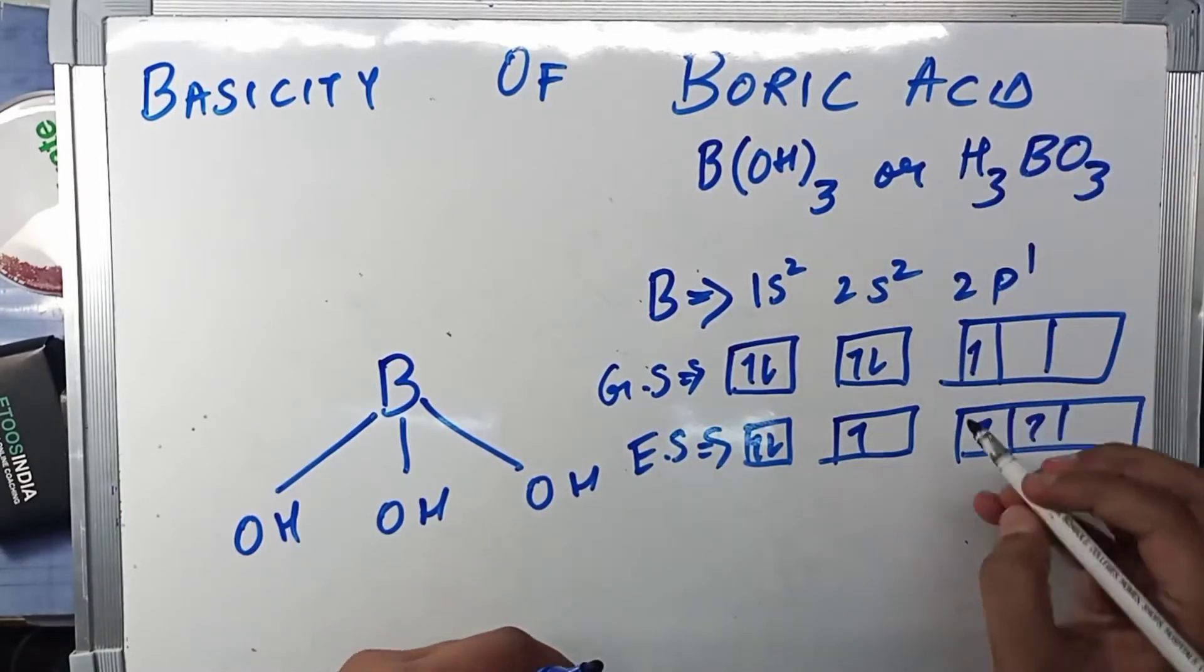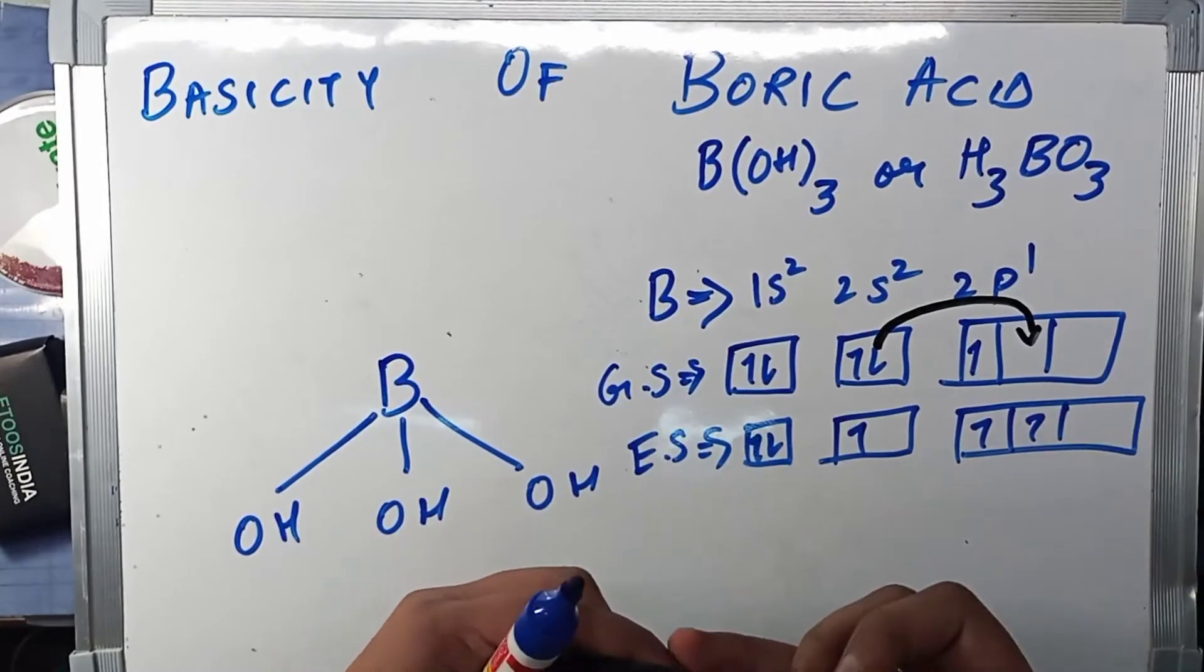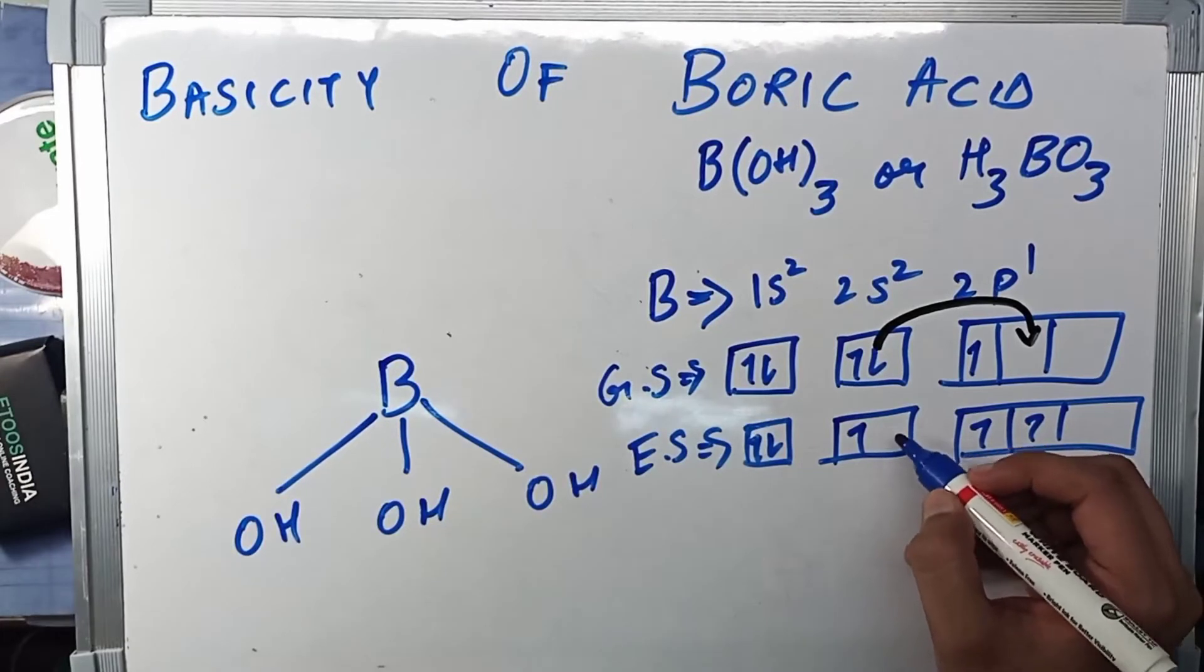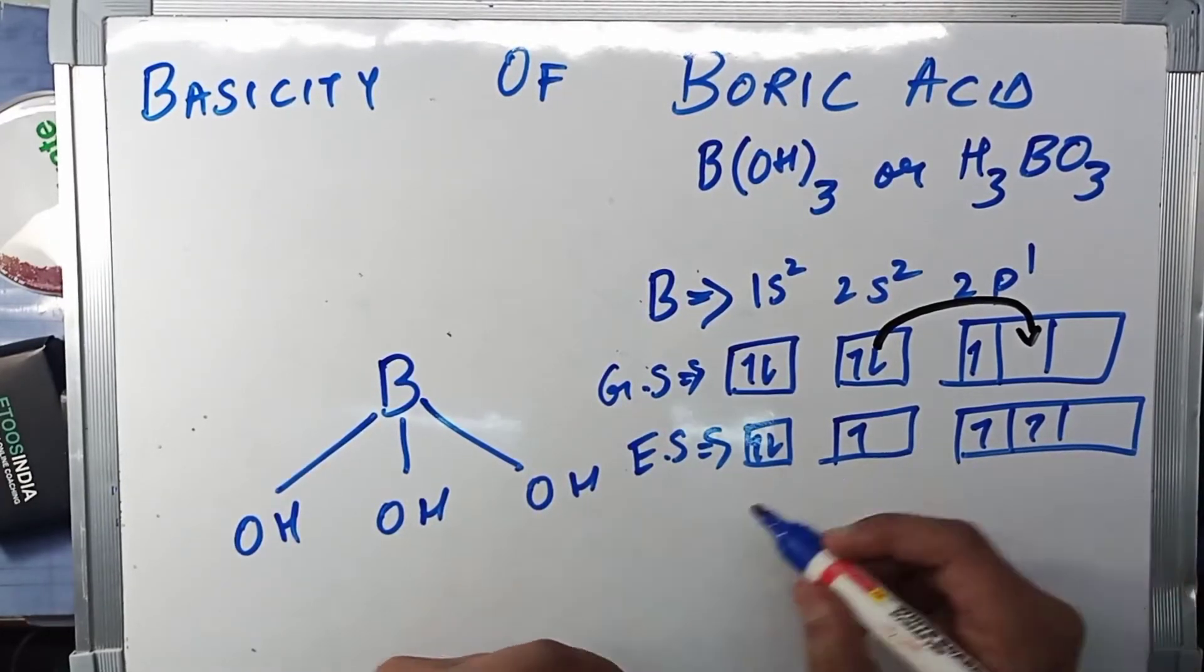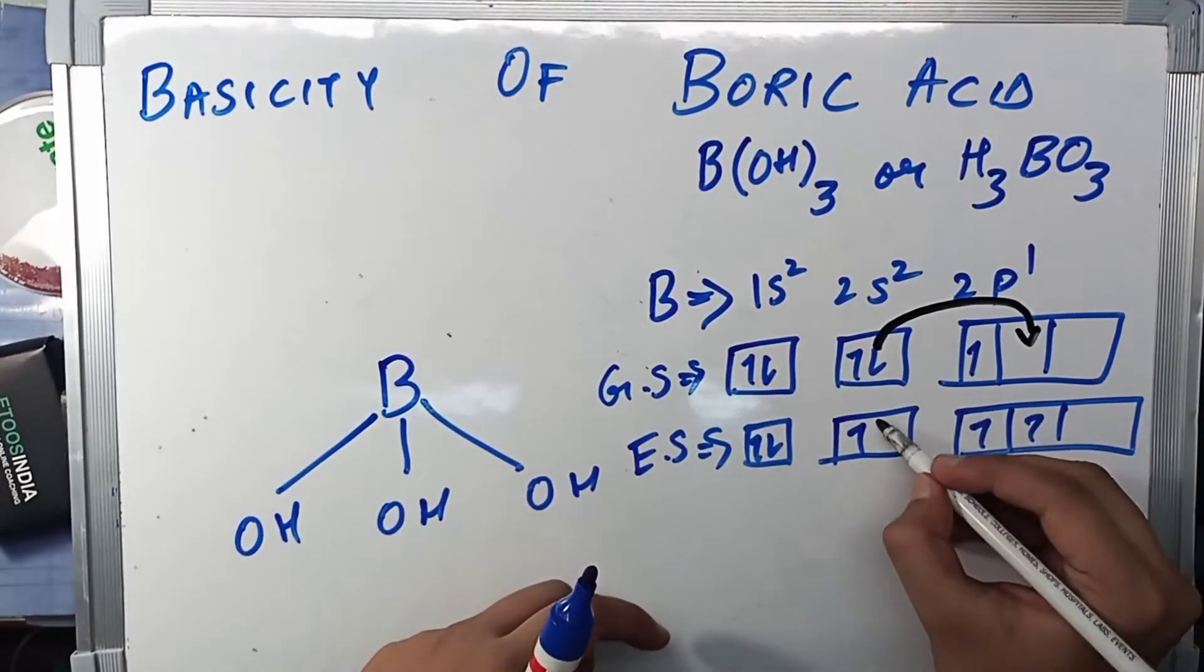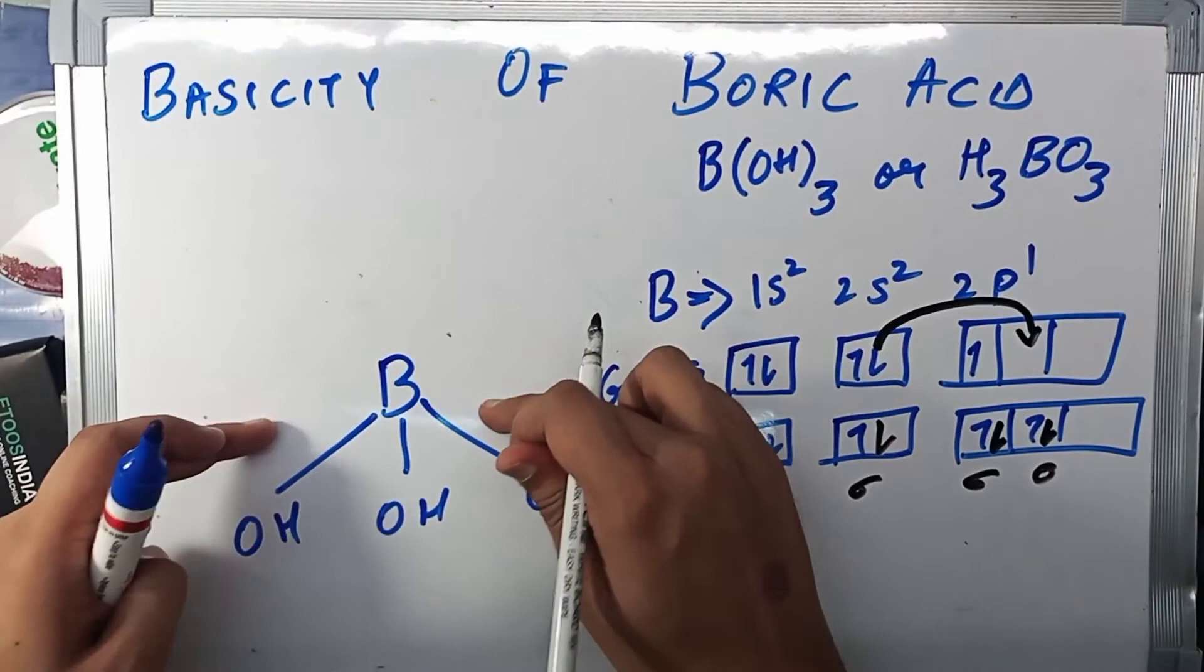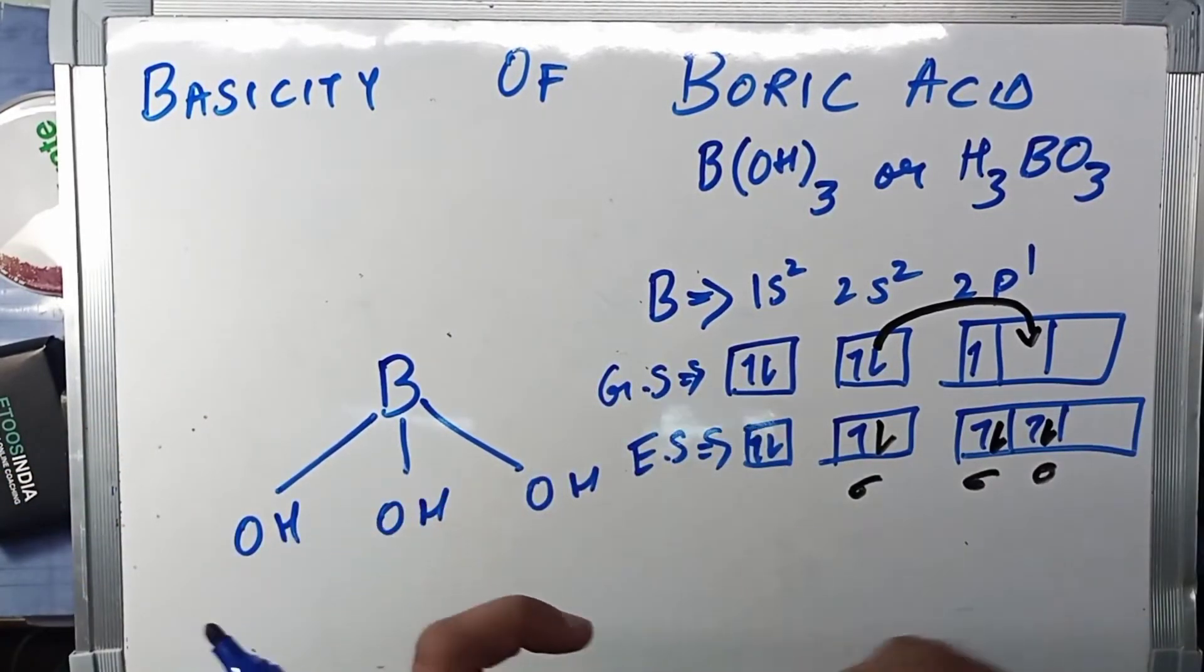So the electron has jumped. Let me show it from a different color—this electron has jumped to this one. So you have one half-filled subshell here, and here, and here. It will make one bond from the OH here, one from here, and one from there. Therefore three sigma bonds, as you can see: 1, 2, and 3.